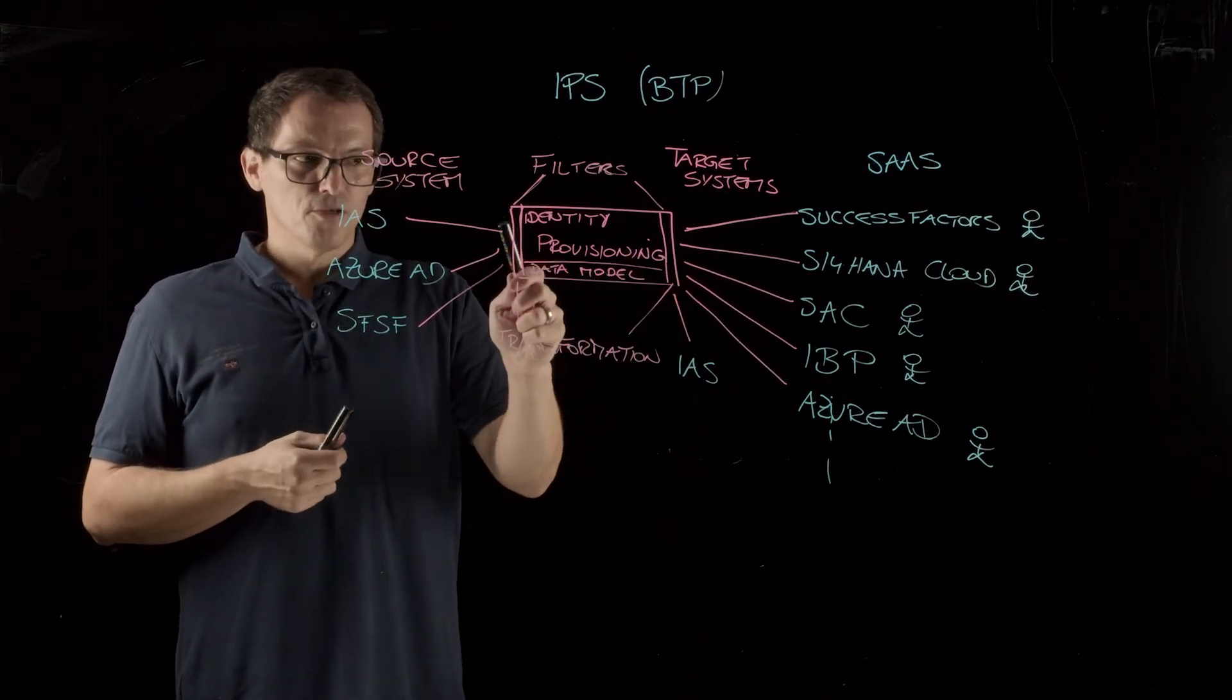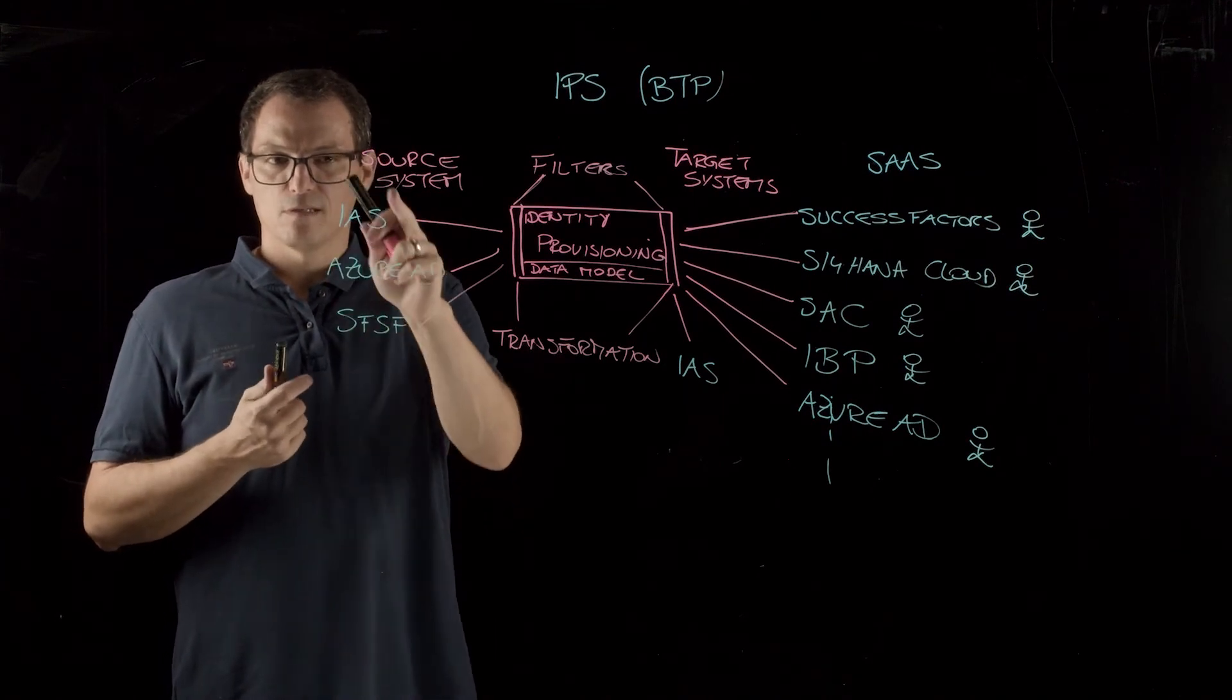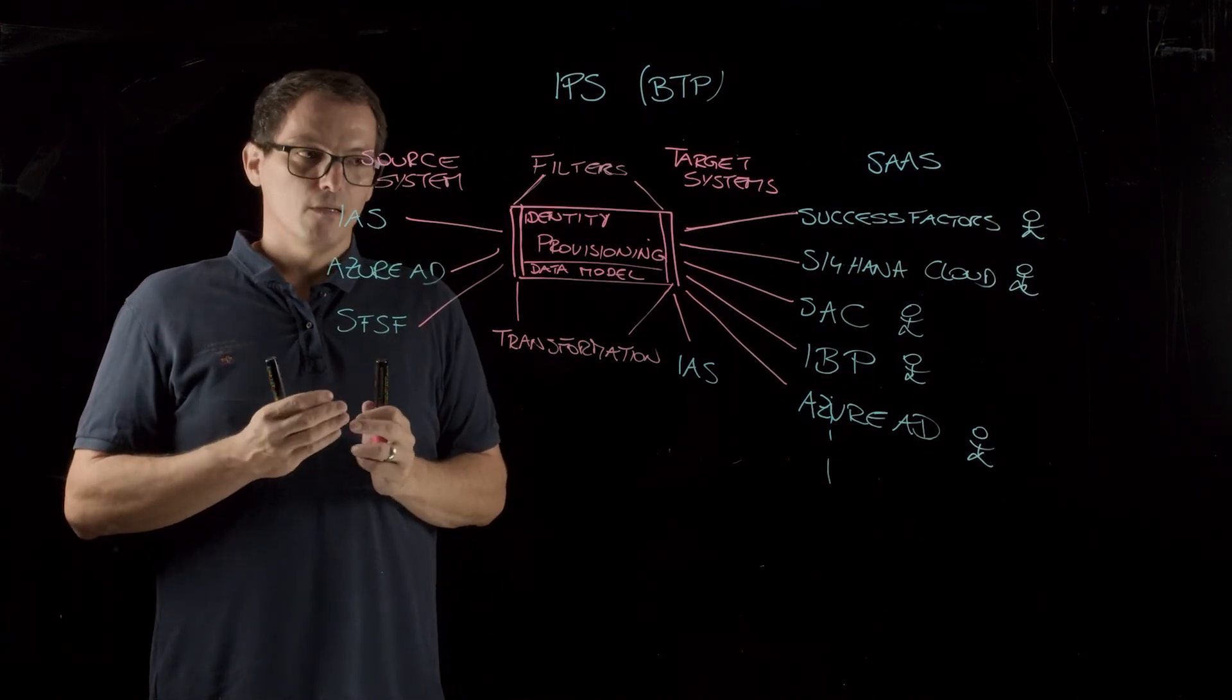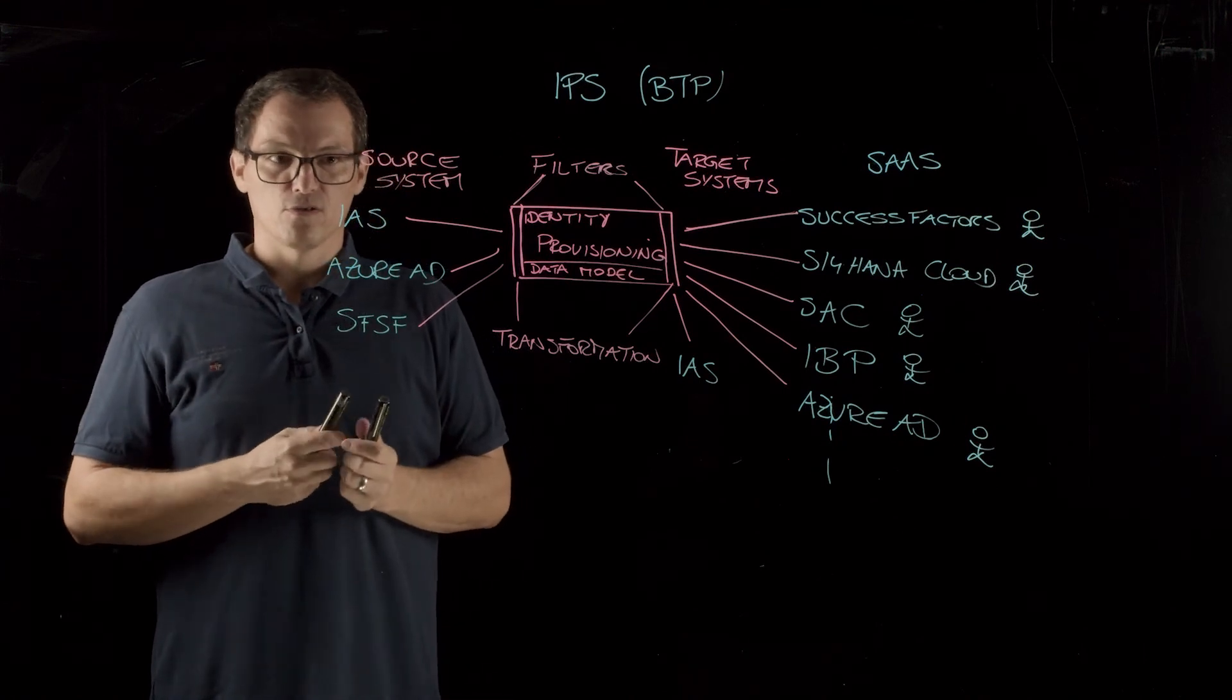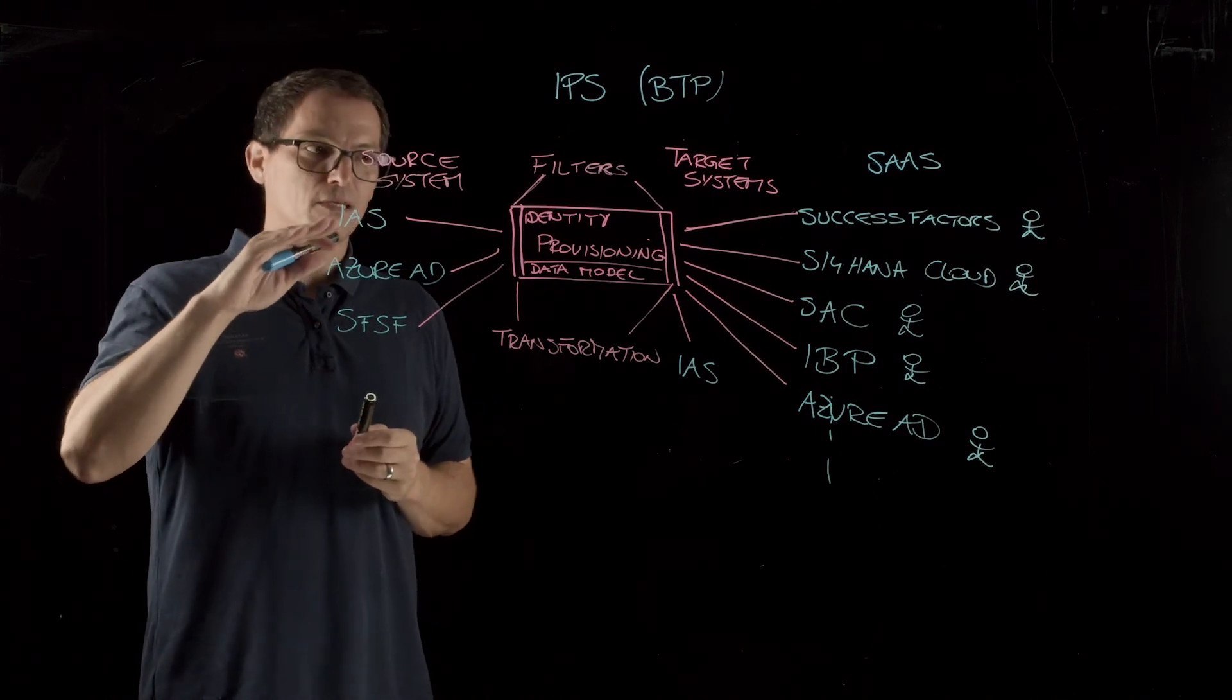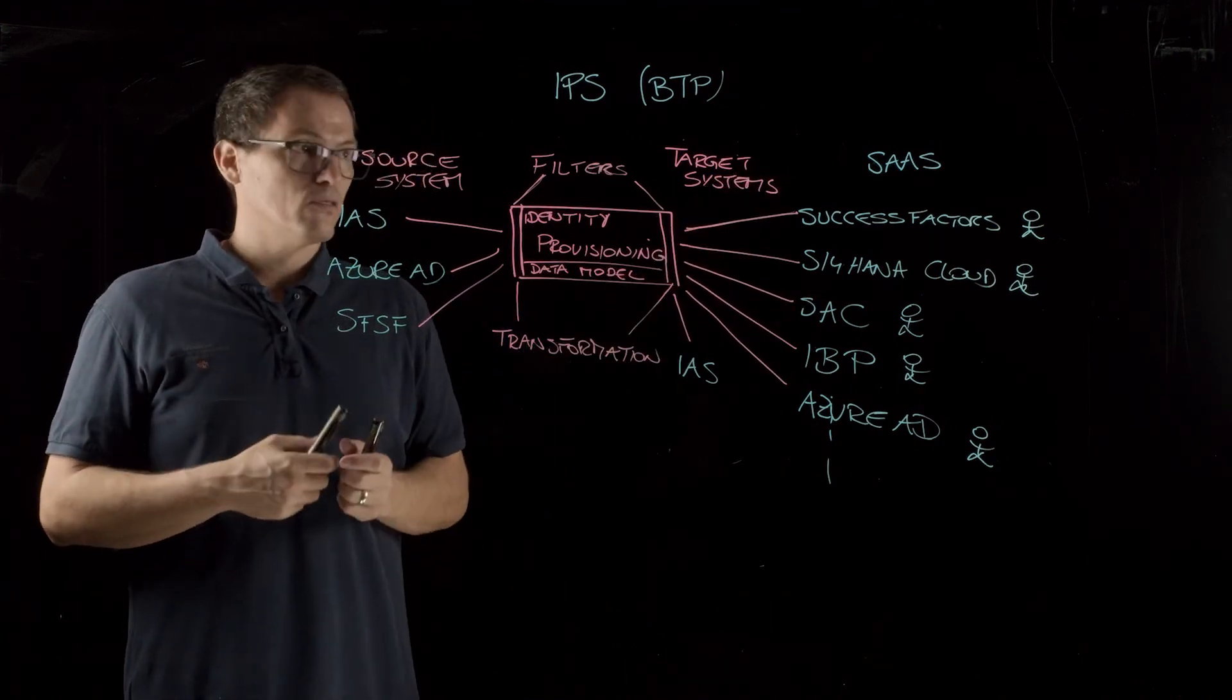What's also done here, you can load this on a regular basis. So you can have a scheduler here, a timer that for instance loads the change data every hour or every 15 minutes from the source system, and then transforms it and provisions it to the target systems. But especially the IAS has a feature. The IAS can also actively send data to the identity provisioning service and then trigger the distribution to the different target systems behind.